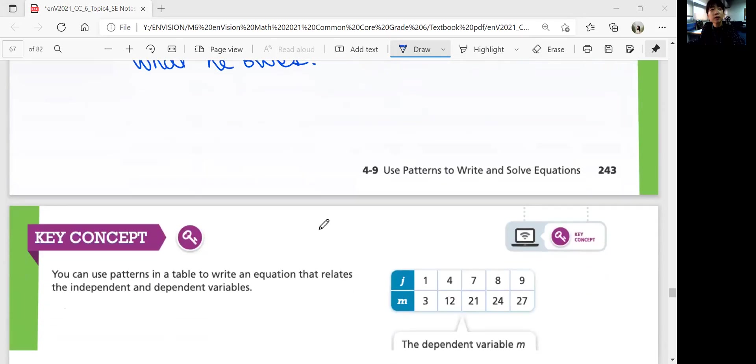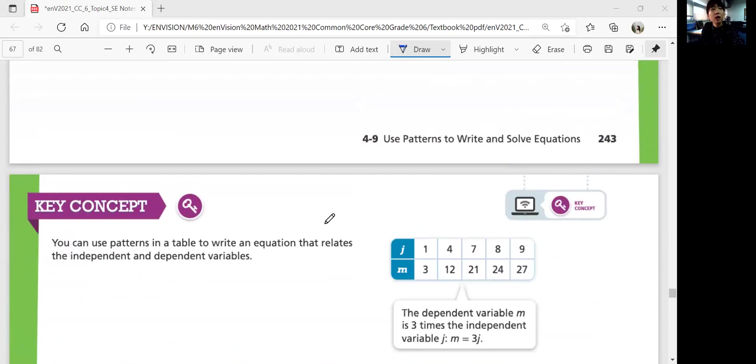So that was lesson 4-9. Let's summarize our lesson. You can use patterns in a table to write an equation that relates independent and dependent variables. So look for patterns and then practice writing the patterns into an equation. So that was our lesson 4-9, Use Patterns to Write and Solve Equations. Let's continue with the next lesson in the next video.